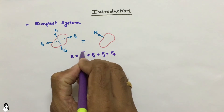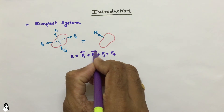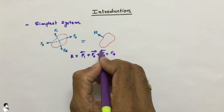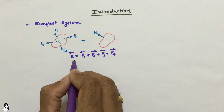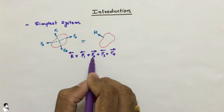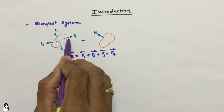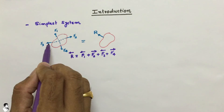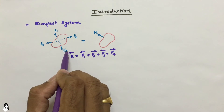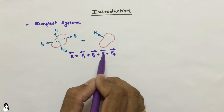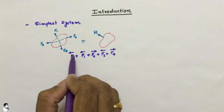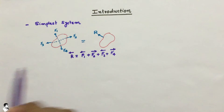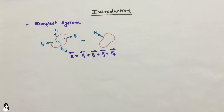If we denote forces by vectors to provide their direction, we can represent F1 in one direction, F2 in another direction, F3 in its direction, and F4 in its direction. After summation of all the forces with their magnitudes and directions, we get the resultant R in a particular direction. Such a system produces only a translational motion of the object.